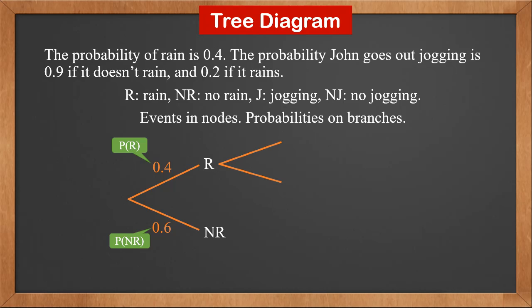From R, we draw out two branches to J and NJ. We know if it rains, the probability of jogging is 0.2. This is P(J|R). We put it on the branch from R to J.